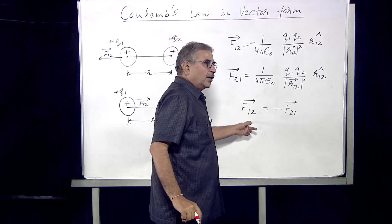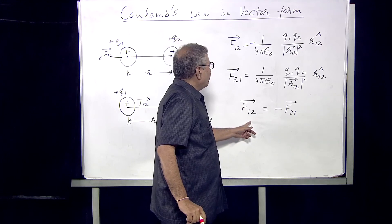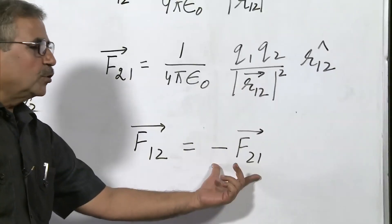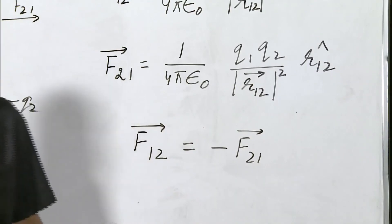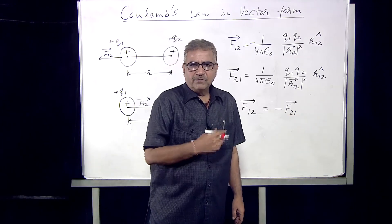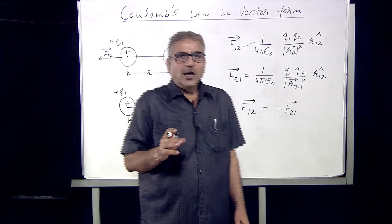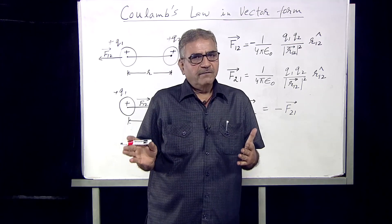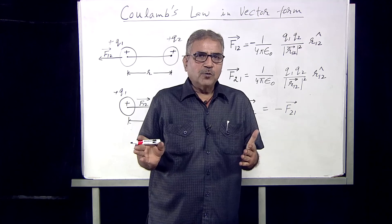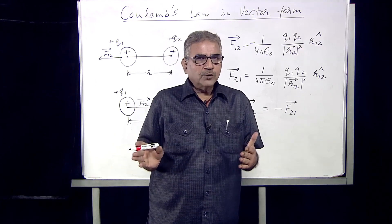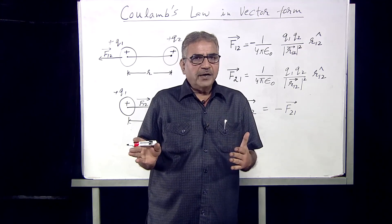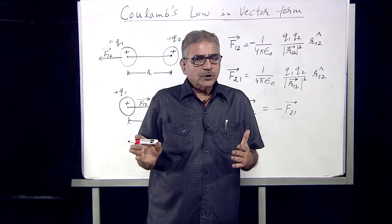The force on charge one due to charge two is equal and opposite to the force on charge two due to charge one. We have clearly understood how Coulomb's law can be explained in the vector form, and we have found that f12 equals minus f21. Today we have understood what Coulomb's law is and how it can be represented in the vector form. Thank you.